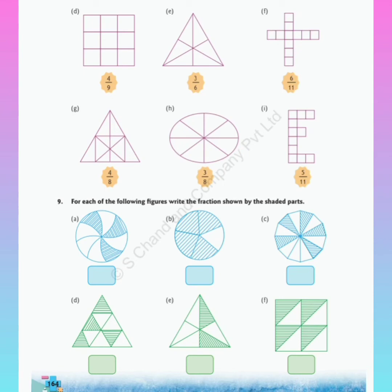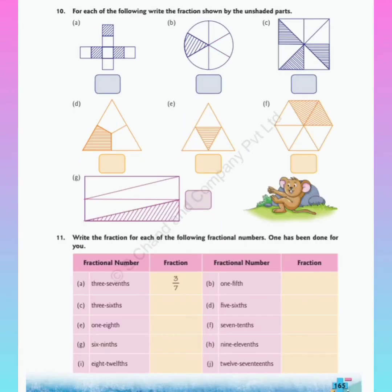Similarly, look at all the figures and write the fractions in the boxes. In question number 10, you have to write the fraction according to the unshaded parts. Count the total number of parts — looking at figure A: 1, 2, 3, 4, 5, 6, 7, 8 — total 8 parts. Unshaded parts are: 1, 2, 3, 4, 5 — so the fraction is 5 upon 8. Read each question carefully before completing it.